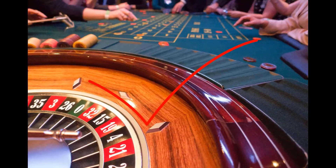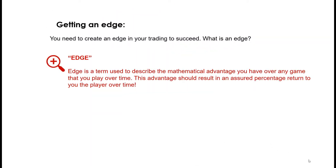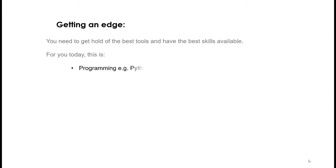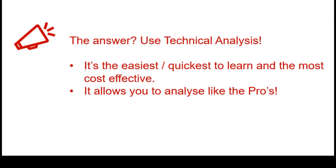Trading and winning is all about getting an edge. Think of it like a casino gamer: it means putting the odds on your side. That's the mathematical description of edge — the advantage that should result over time in the likelihood of you winning. You've got to beat the market at their own game, using the best tools and skill sets available. Today that's programming like Python, technical analysis, or specialist market knowledge. For us, it's going to be technical analysis — it's the easiest and quickest to learn and allows you to analyze like the pros.